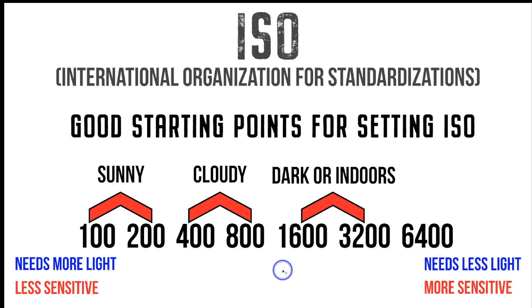Remember, not only does ISO control light, it also controls the quality of your image. At 100, you're going to have the best quality image. As you move up, it's going to reduce the image quality and start to add noise to your image.